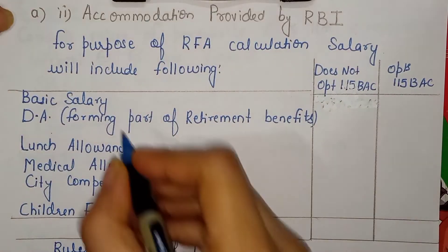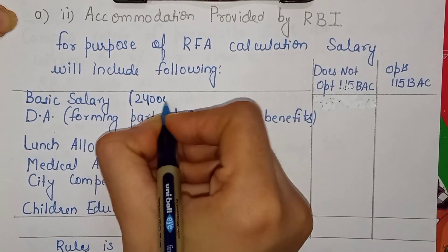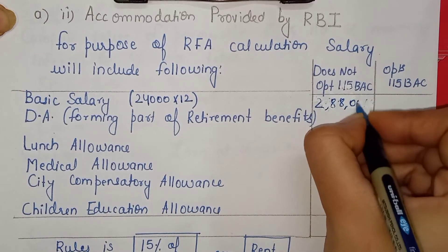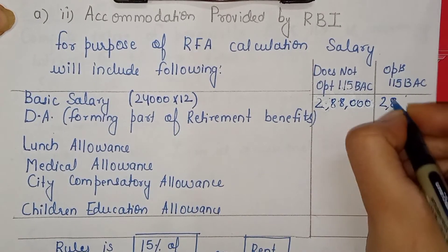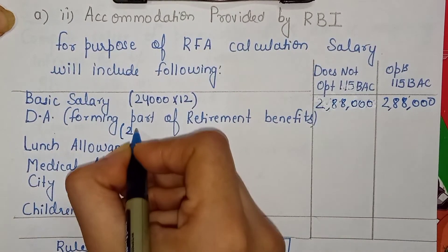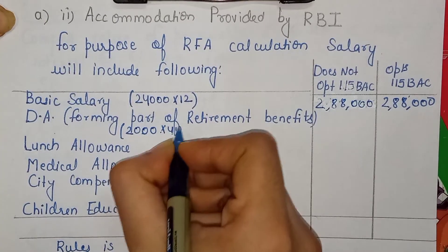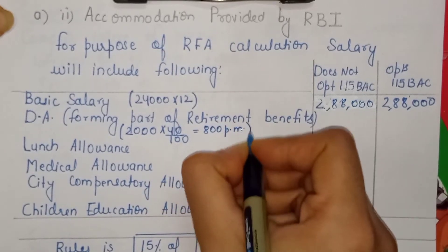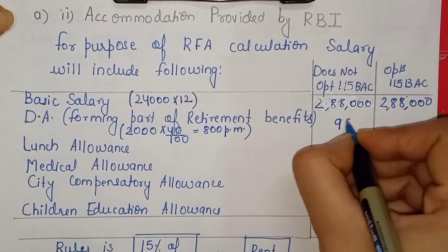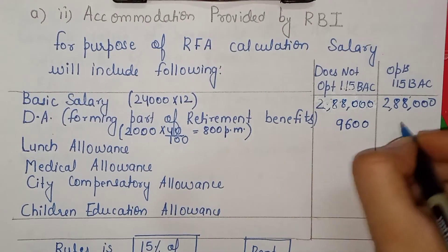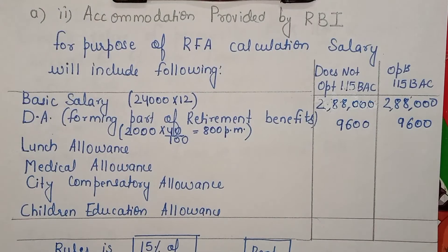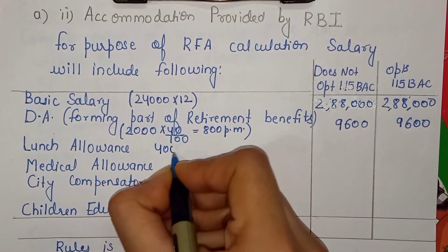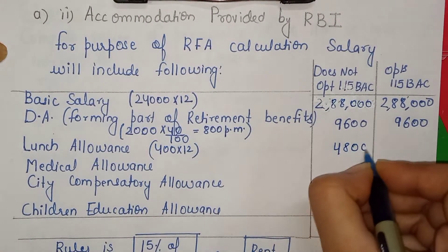Let's calculate the salary. Basic salary: 24,000 per month × 12 = 2,88,000. DA: 2,000 per month, but only 40% forms retirement benefits, so 800 per month × 12 = 9,600. Lunch allowance: 400 per month × 12 = 4,800 — fully taxable, same for both cases.